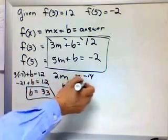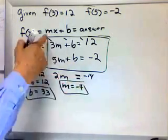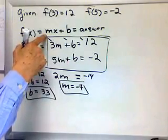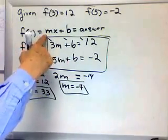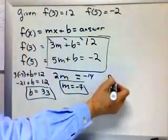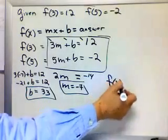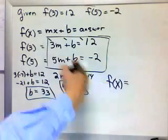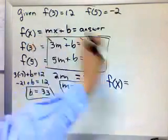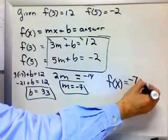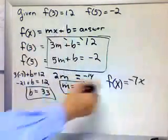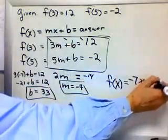Now here's the cool thing. I have the m and I have the b. So I have the general equation. Just put the m and the b into that. So answer, f of x equals negative 7x plus b, which my b was 33, plus 33.